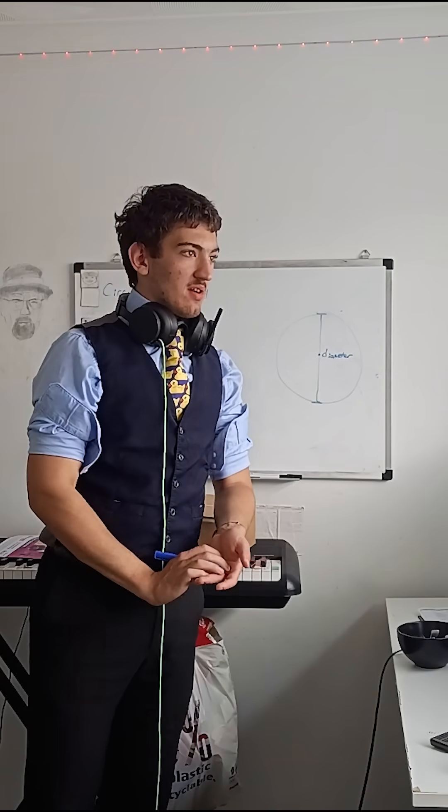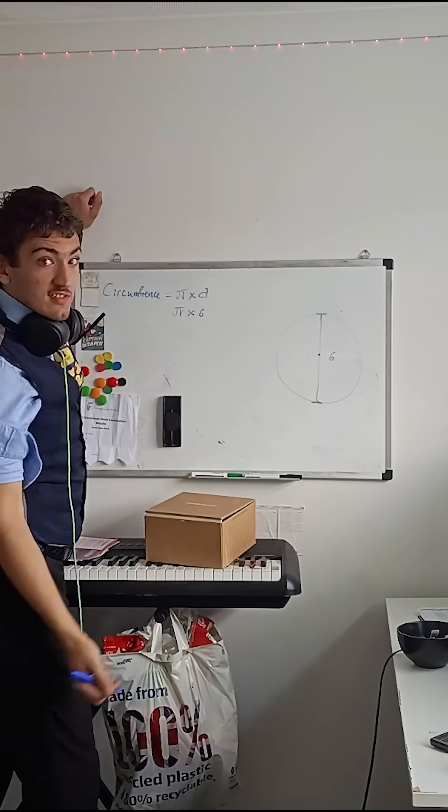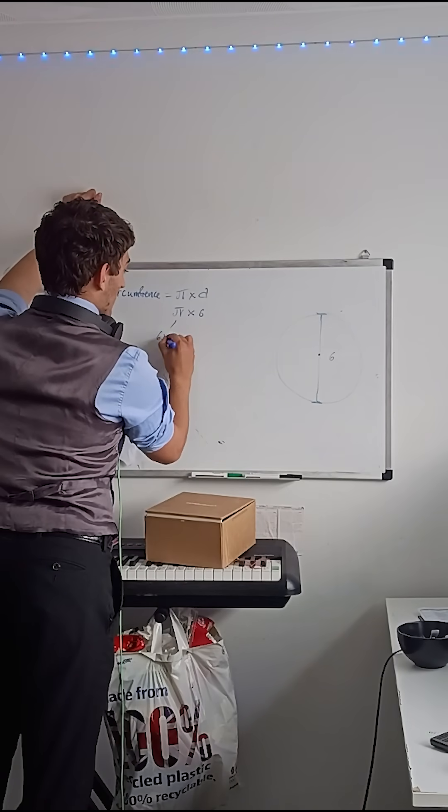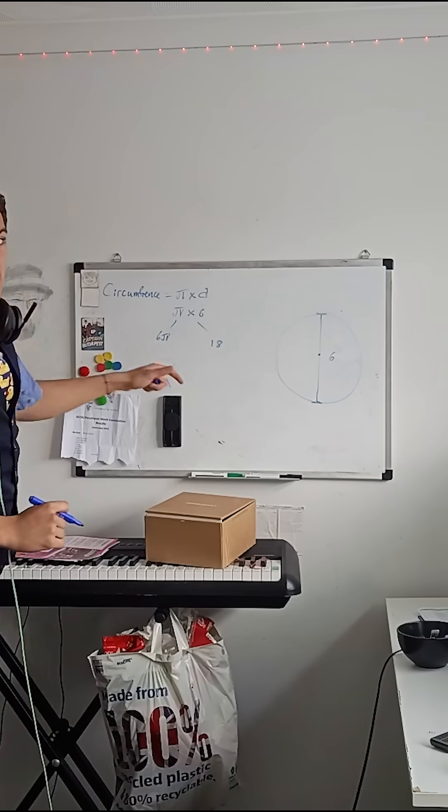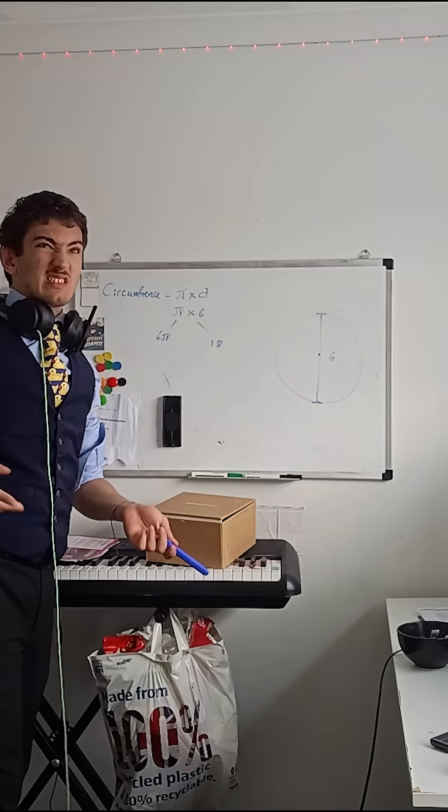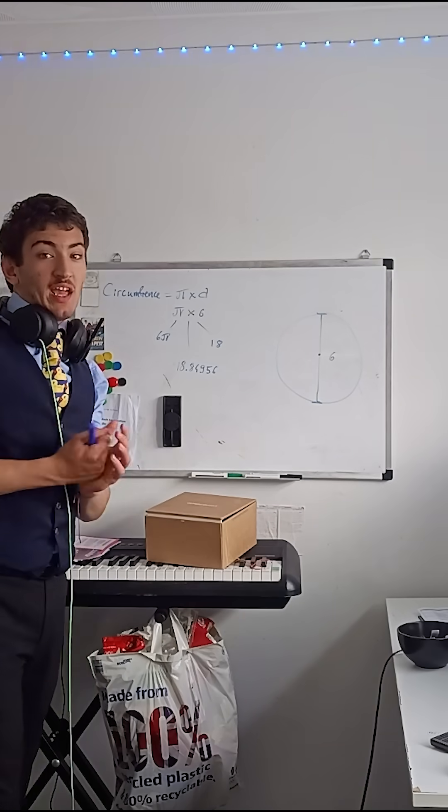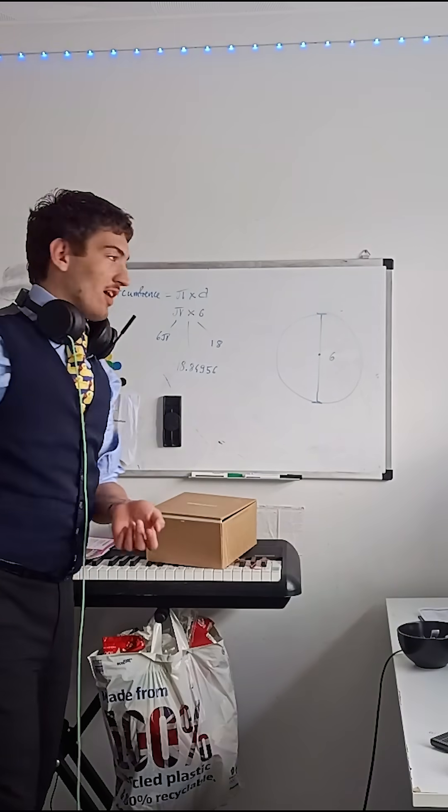So let's say we have diameter as six. The circumference of that circle would now either be six pi or 18 as simplified. The actual number would be something more of the lines of 18.84956. However, for now, let's just simplify it.